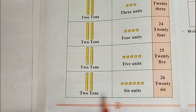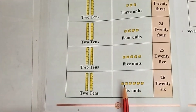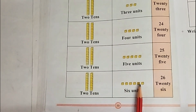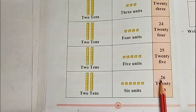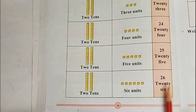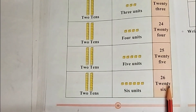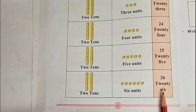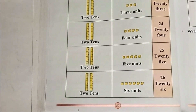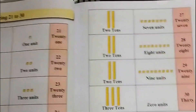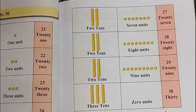2 tens, 6 units: 26. In figure: 26. In words: T-W-E-N-T-Y (20) S-I-X: 26. Let's move on to the next page.